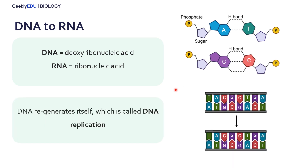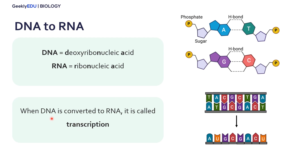Within our cells, DNA will also regenerate itself, and this is called DNA replication. So here we have DNA basically just cloning itself, which often happens when our cells divide. But DNA is also converted into RNA, and this process is called transcription. It's important to note that RNA is just a single row of nucleic acids, and instead of thymine, we have uracil as the nucleic acid.